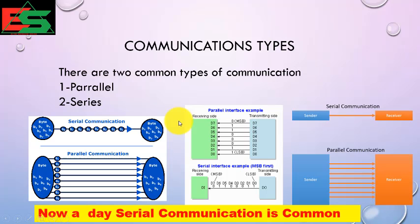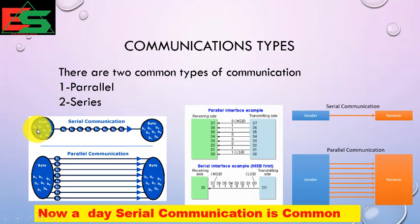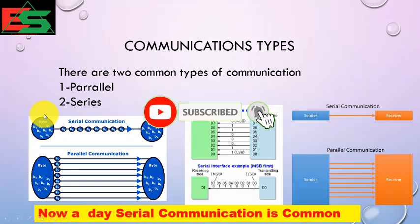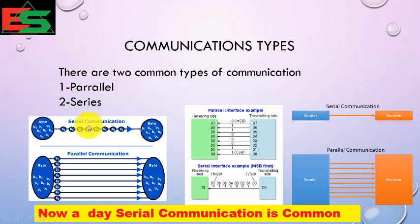First is communication type. There are two common types of communication systems: one is parallel and second is serial. As you can see in the picture, in serial communication there are two devices — one is the transmitter and the second is the receiver — and both are communicated by one wire in series.